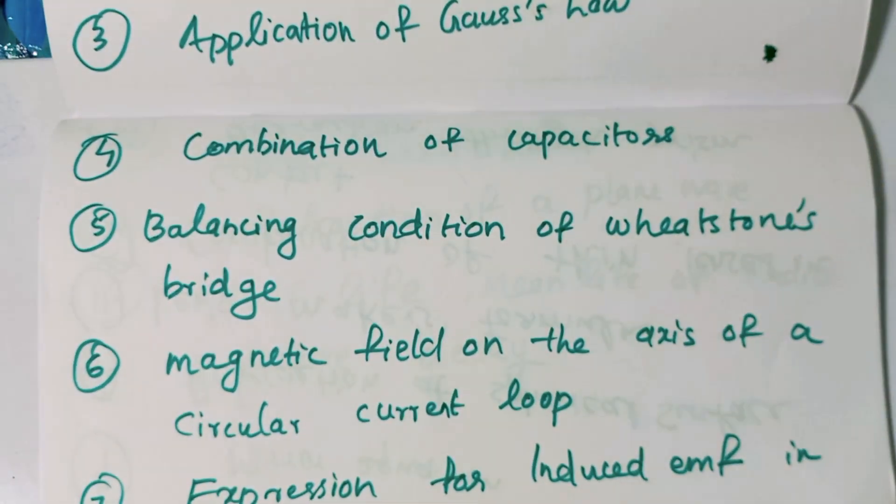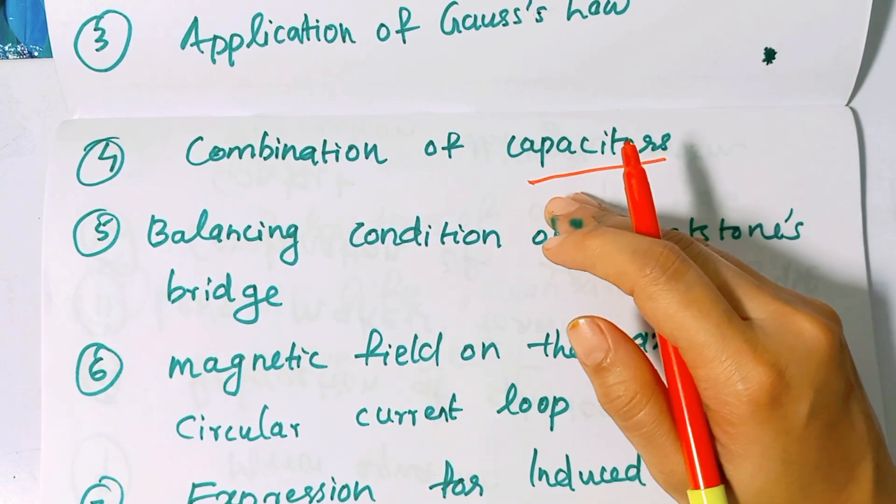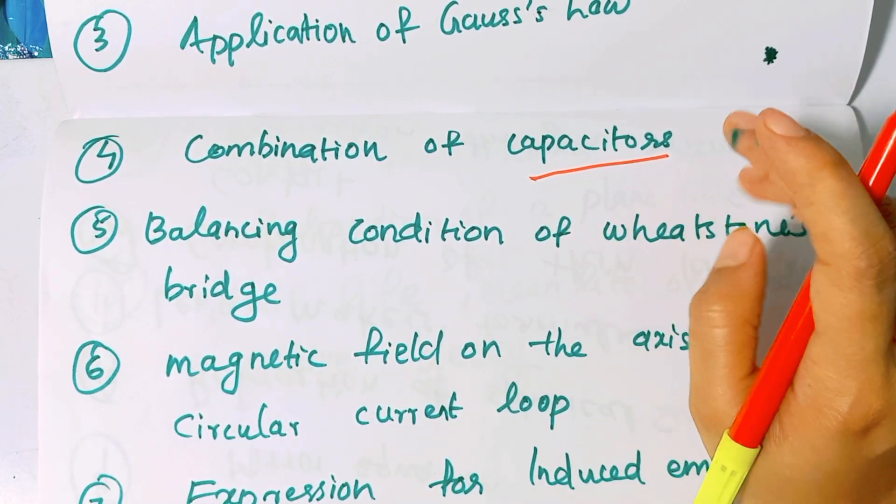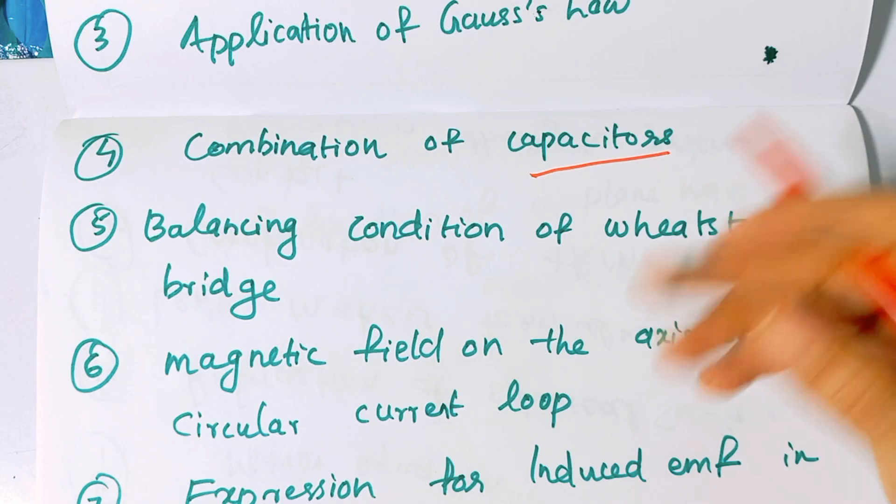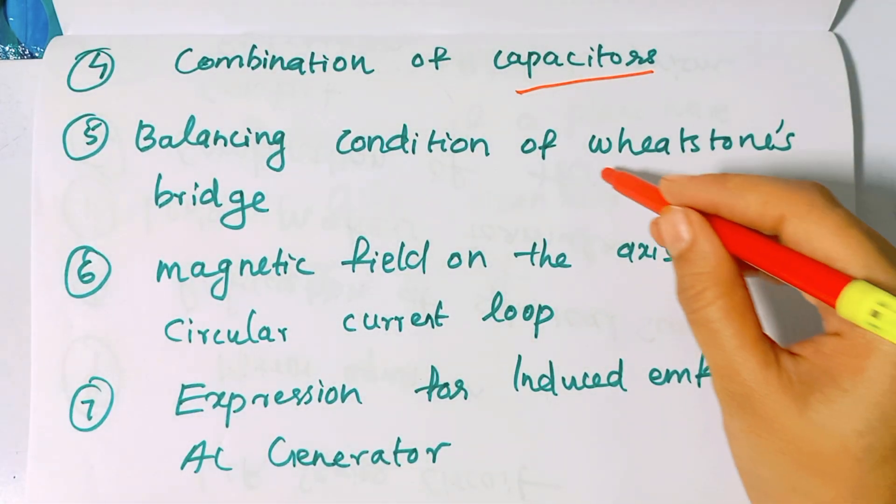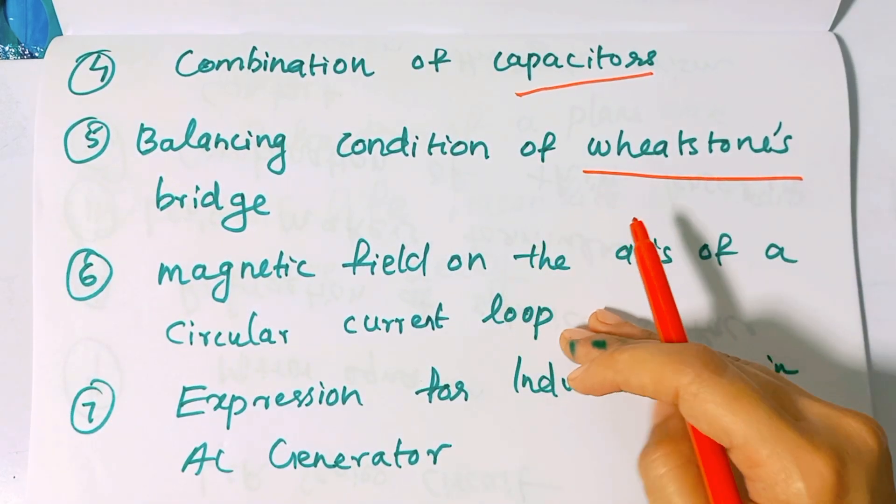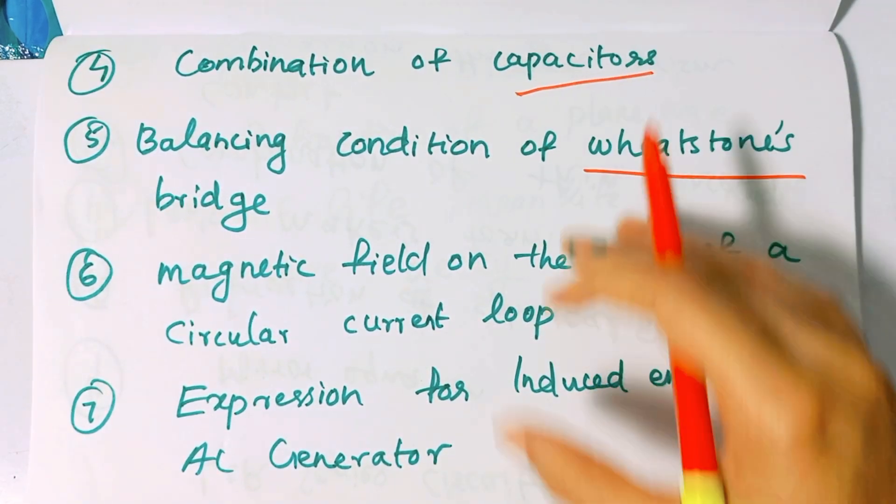The next chapter is combination of capacitors - capacitors in series and capacitors in parallel with derivations. This is one of the main topics. Balancing condition of Wheatstone Bridge is another important derivation.